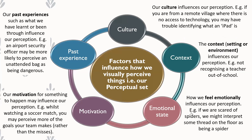Your emotional state can also influence your perception. If you have a phobia of spiders, you might see a little piece of thread on the floor and think it's a spider. Your emotional state towards a specific object or thing can influence how you view it.